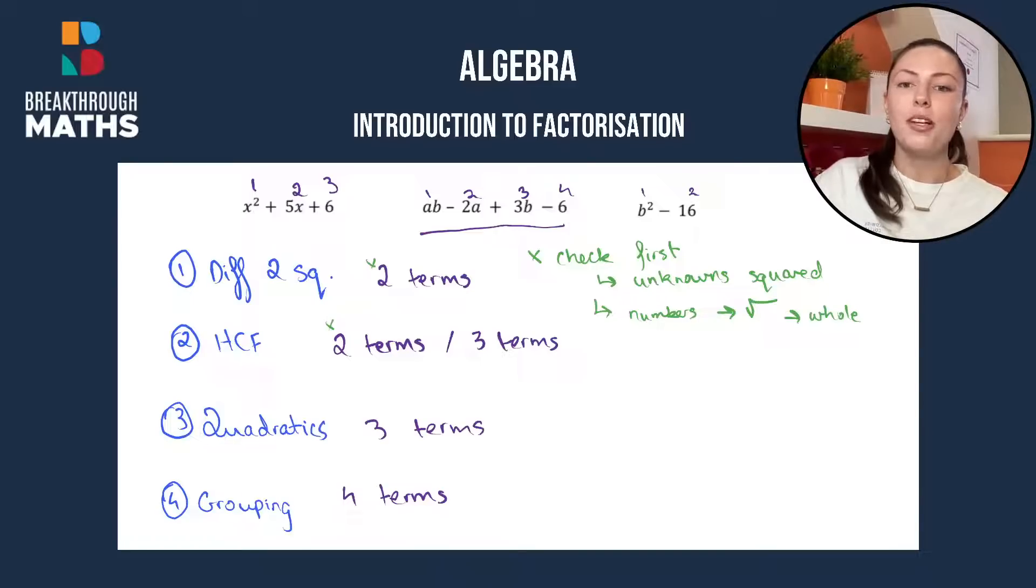Next up you can see that highest common factor and quadratics can both have three terms. So again same situation. How do we know whether it'll be highest common factor or quadratics?